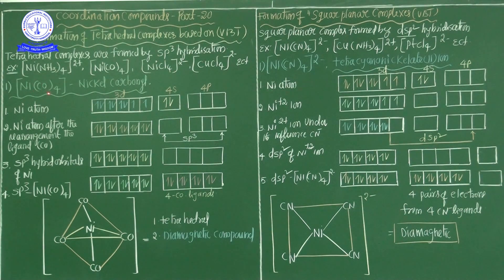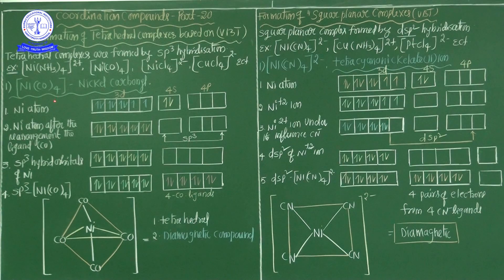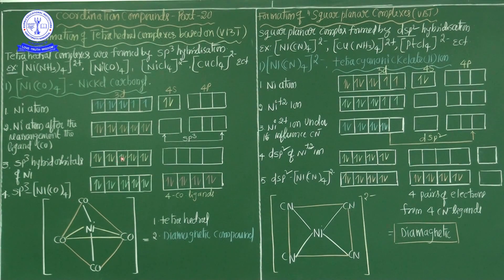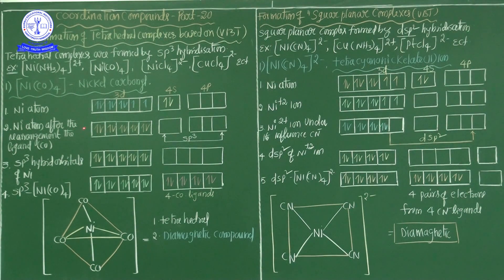The first example from tetrahedral complexes is nickel carbonyl, Ni(CO)₄. It is a neutral complex — there is no net charge on the compound. In this complex, the central nickel atom is attached to 4 CO ligands. The oxidation state of nickel here is 0. Nickel has configuration 3D8, 4S2.